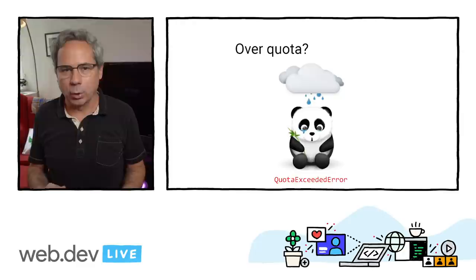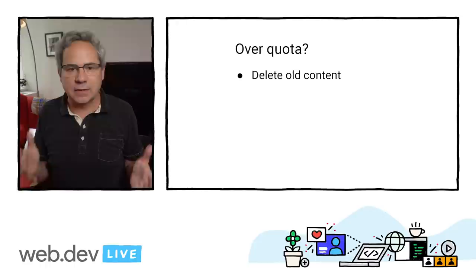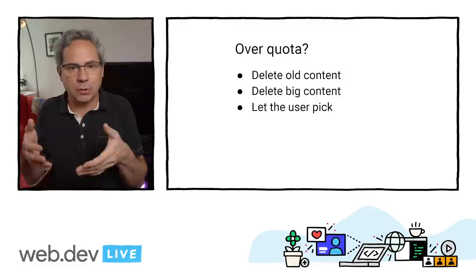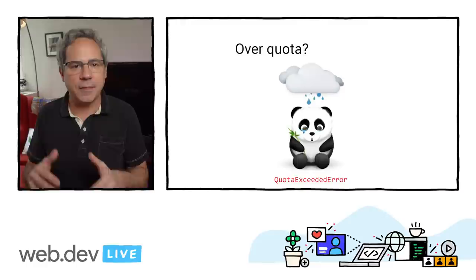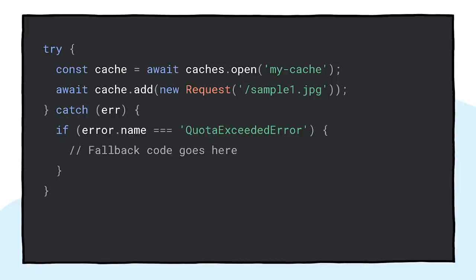So what should you do when you go over quota? Most importantly, you should always catch and handle write errors, whether it's a quota exceeded error or something else. Then, depending on your app design, decide how to handle it — for example, delete content that hasn't been accessed in a long time, remove data based on its size, or provide a way for users to choose what they want to delete. Both IndexedDB and the Cache API throw a DOM error named QuotaExceededError when you've exceeded the quota. For IndexedDB, the transaction's onabort handler will be called, passing an event whose error property contains a DOM exception. For the Cache API, writes will reject with a QuotaExceededError DOM exception.